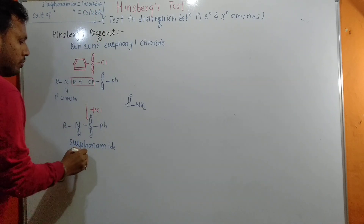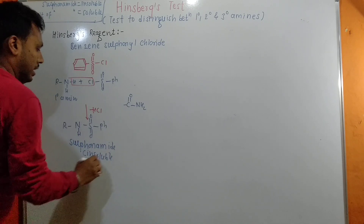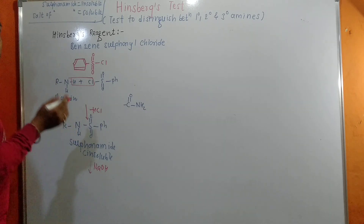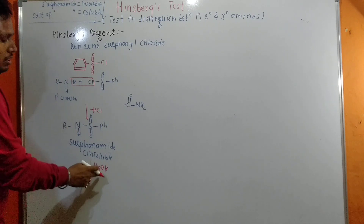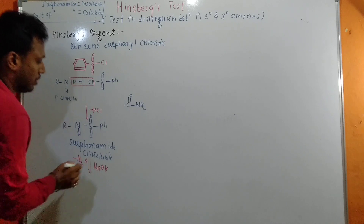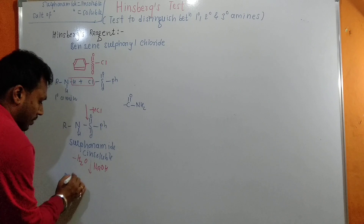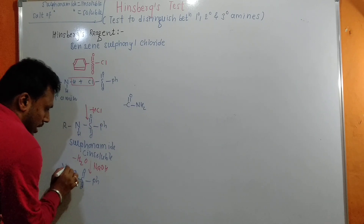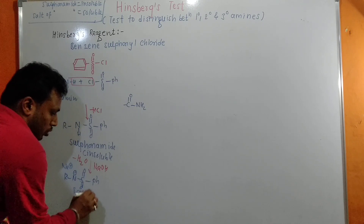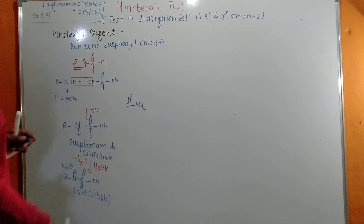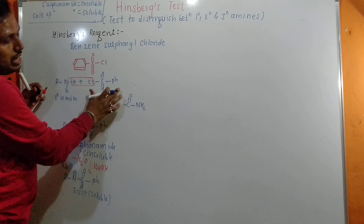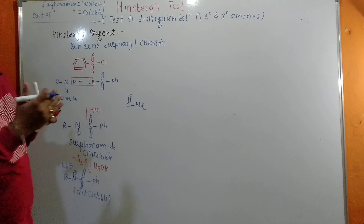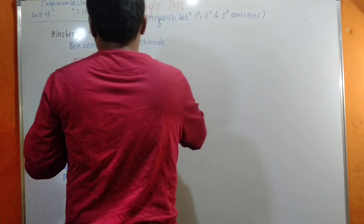This sulfonamide is insoluble, but when it reacts with a base like NaOH, the hydrogen attached to nitrogen is acidic in nature. That acidic hydrogen combines with NaOH, generating H₂O as a byproduct along with the salt of sulfonamide: R-N⁻-S(=O)₂-Ph stabilized by Na⁺. Salts are soluble. So the observation for primary amine: it forms an insoluble sulfonamide that, on reaction with NaOH, forms a soluble salt.